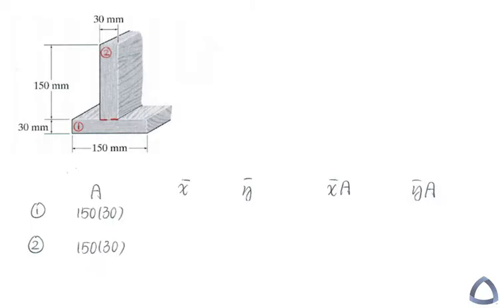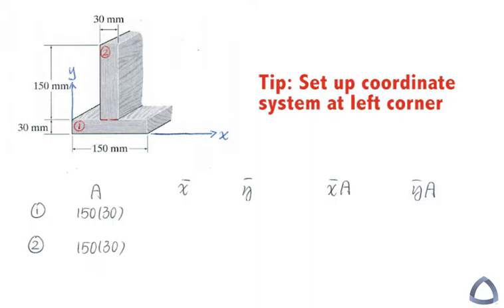So you may ask me, can I set up my coordinate system somewhere here, somewhere there? Yes you can. The final answer is going to be different. The number is going to be different, but the location of the centroid will be the same. Typically we like to set up the coordinate system at the very left corner here.